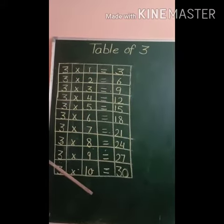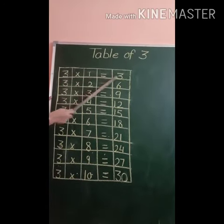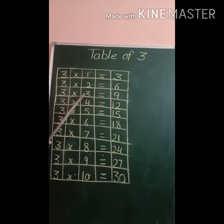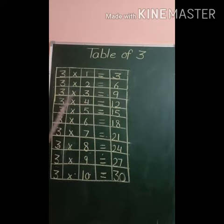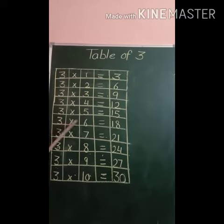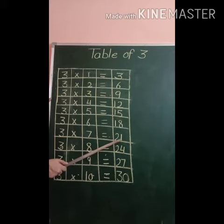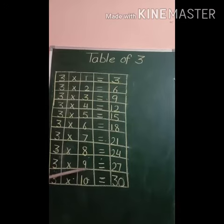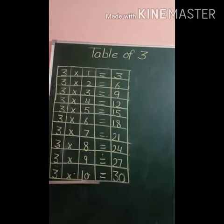Now repeat once again. 3 1's are 3, 3 2's are 6, 3 3's are 9, 3 4's are 12, 3 5's are 15, 3 6's are 18, 3 7's are 21, 3 8's are 24, 3 9's are 27, 3 10's are 30.